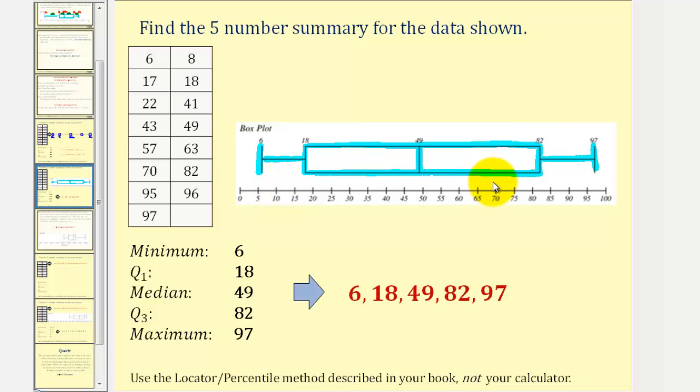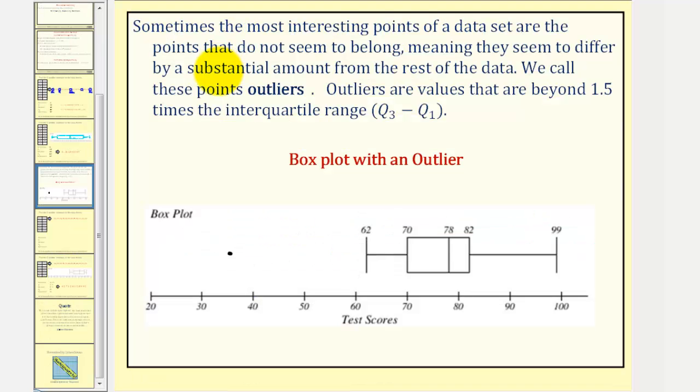But we do have to modify our box plot if we do have outliers in the data. So now let's talk about outliers. Sometimes the most interesting points of a data set are the points that do not seem to belong, meaning they seem to differ by a substantial amount from the rest of the data. We call these points outliers. Outliers are values that are beyond 1.5 times the interquartile range, which would be Q3 minus Q1. We indicate outliers by plotting points rather than extending the whisker out to the outliers.